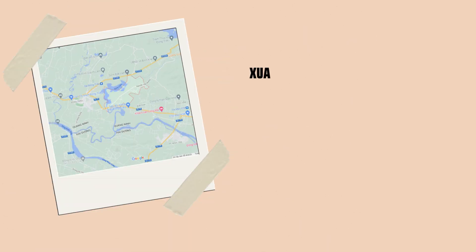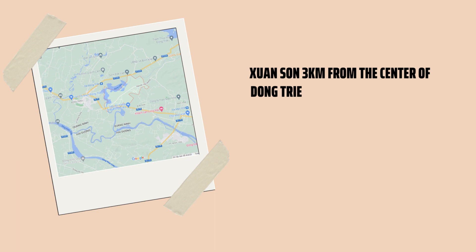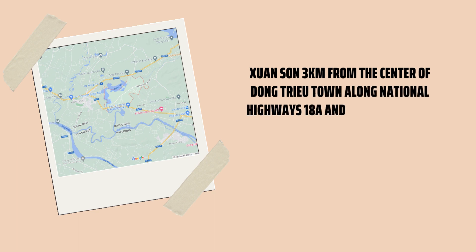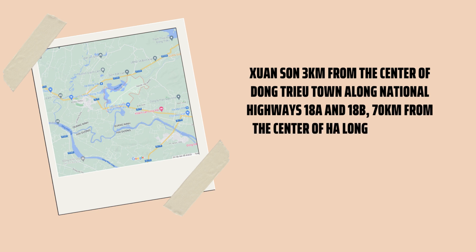The average annual temperature of Shenzhen Commune is about 23.5 degrees Celsius, ranging from 18 to 28 degrees Celsius. The highest temperature is about 30 degrees Celsius, occurring from April to August every year.